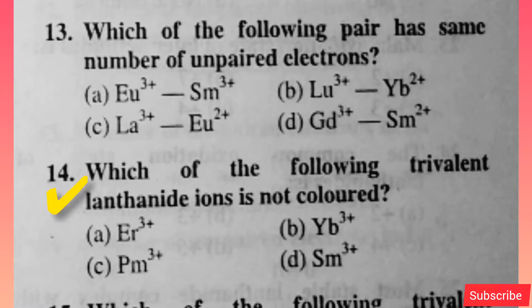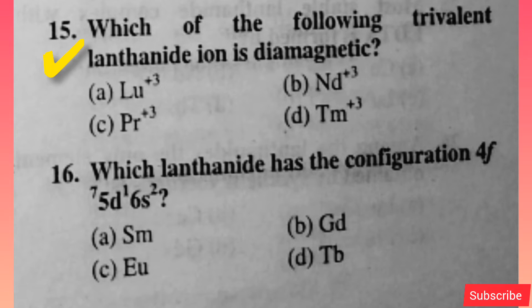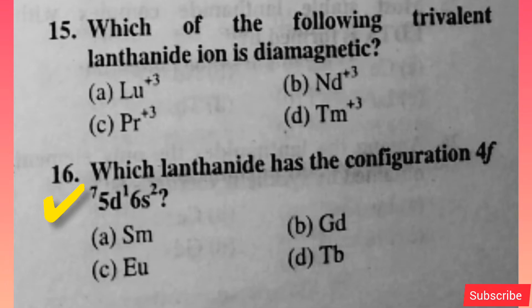The separation of lanthanides in ion exchange method is based on size of the ion — option D is correct. Which of the following pair has the same number of unpaired electrons? Option B is correct. Which of the following trivalent lanthanide ion is not colored? Option B is correct.